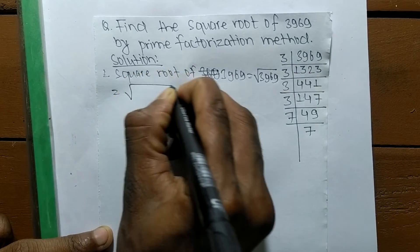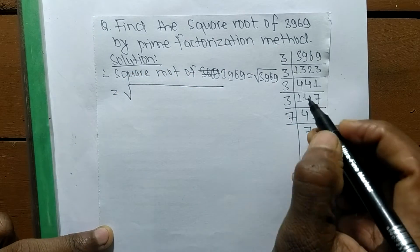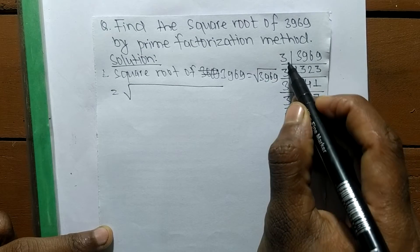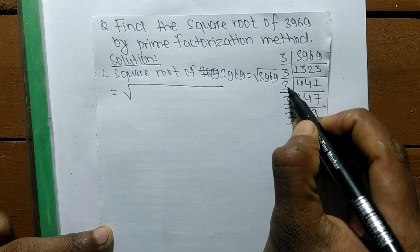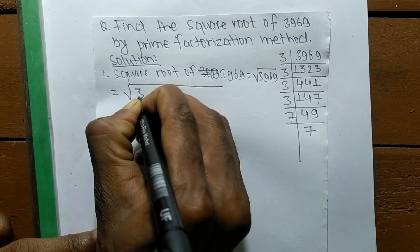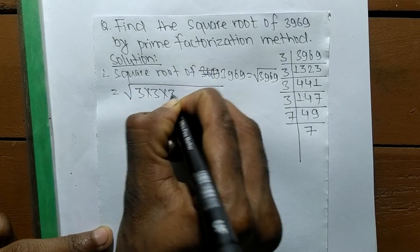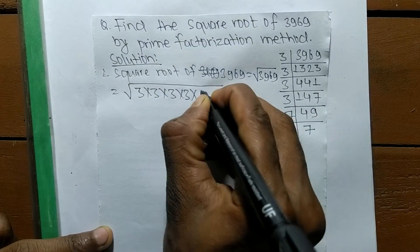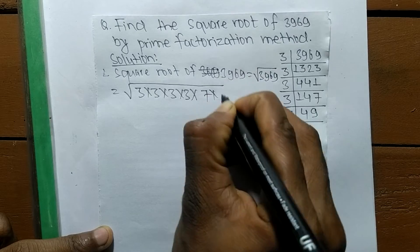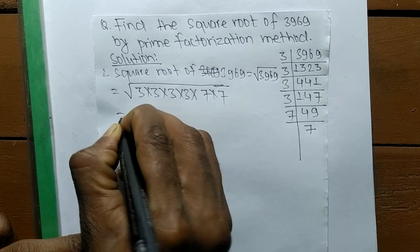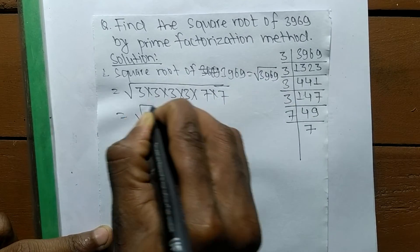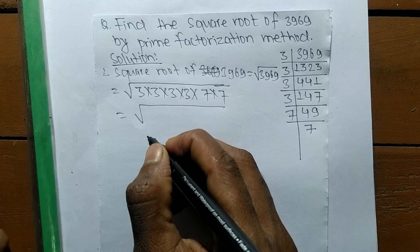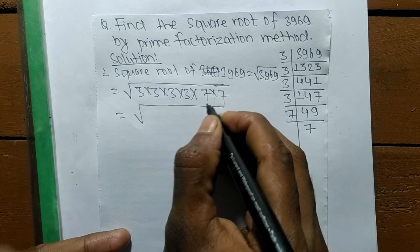It is equal to — now we write all the prime factors of 3969. We have four 3s: 3 times 3 times 3 times 3, and also 7 times 7. We have written down all the prime factors.